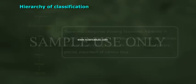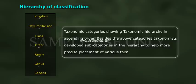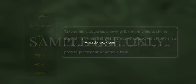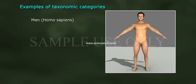Taxonomic categories showing taxonomic hierarchy in ascending order. Besides the above categories, taxonomists have developed subcategories in the hierarchy to help with more precise placement of various taxa.